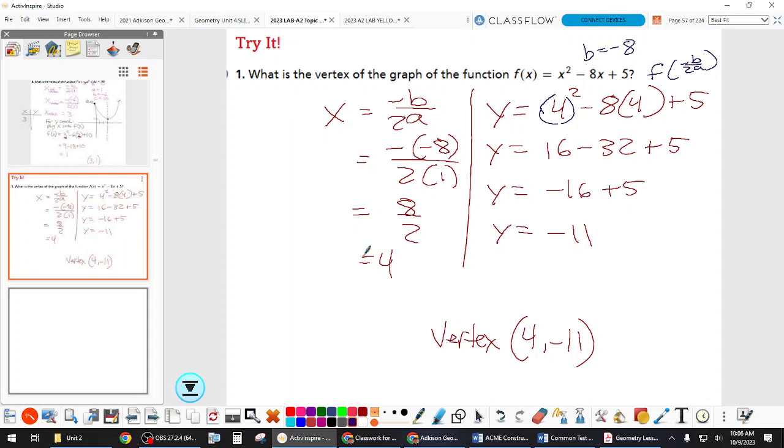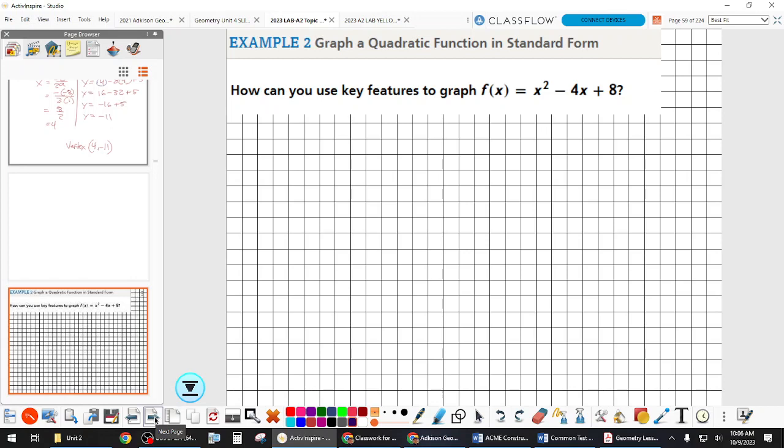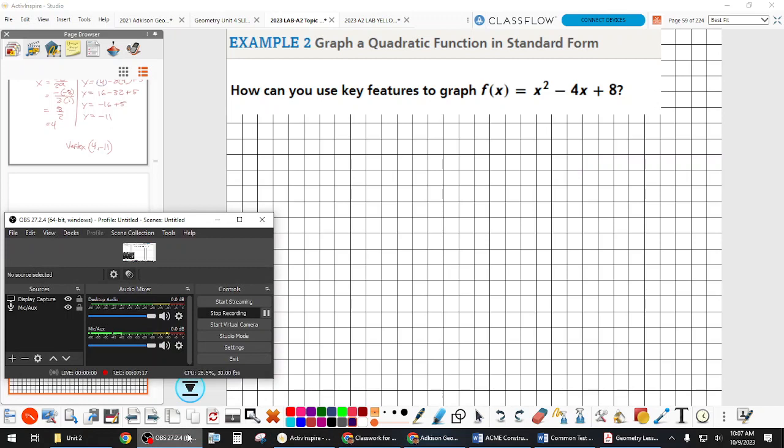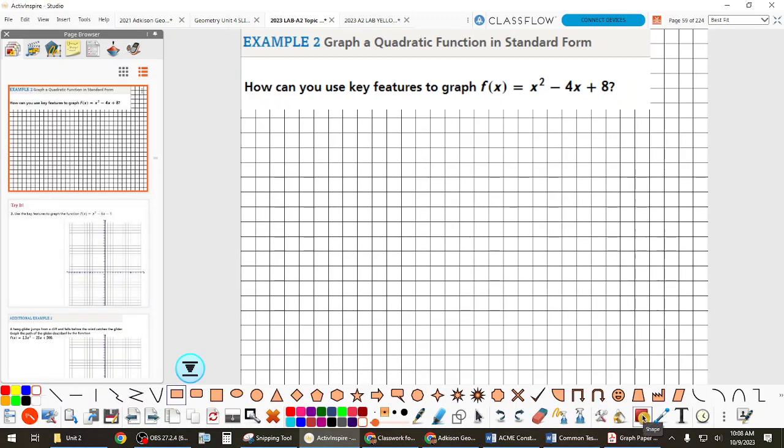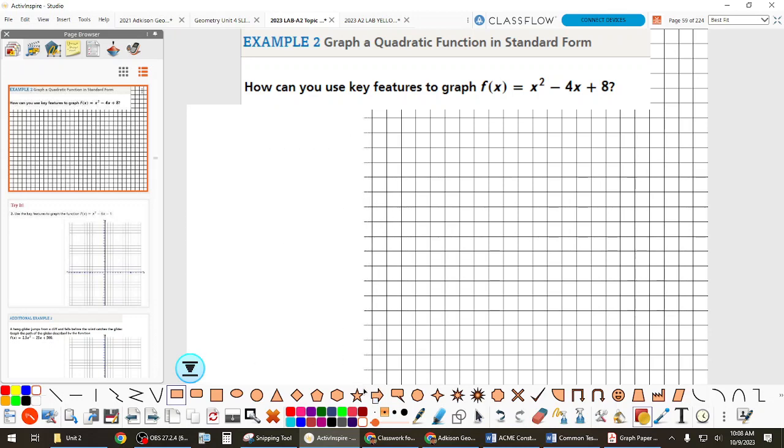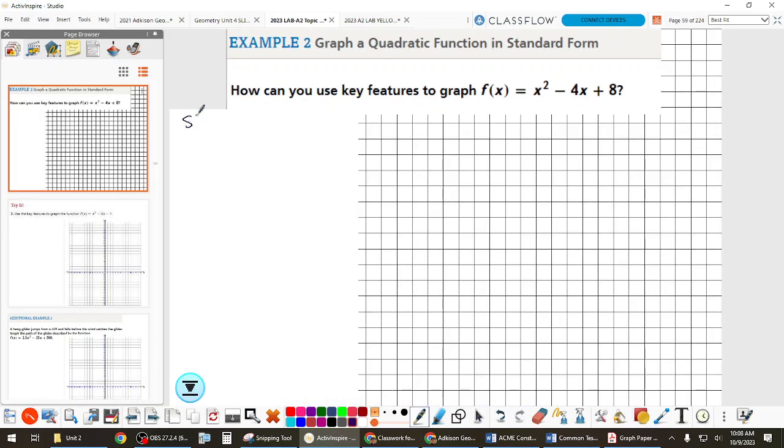So what we're doing today is working on graphing from standard form. Graphing from standard form requires the same thing as graphing in vertex form, which is start with the vertex. However, we have to do this little bit of work to find the vertex before we can do that. So I want you to write this down as an example.